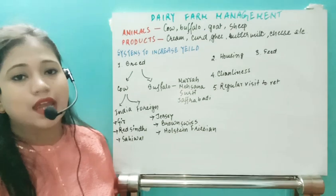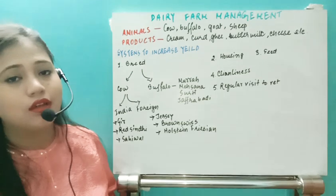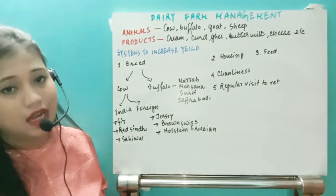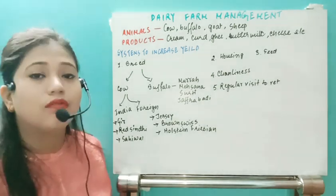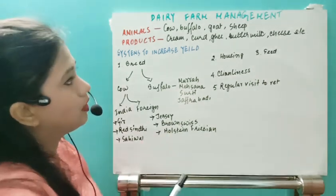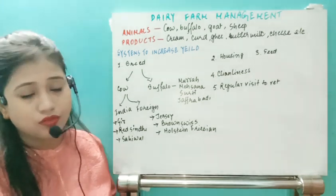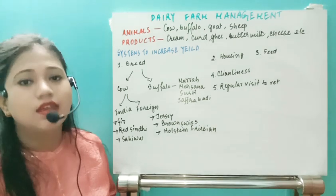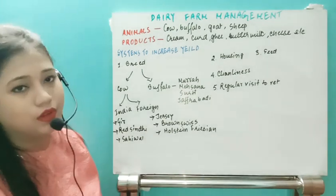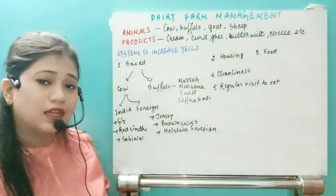Let's start with dairy farm management. The animals taken for dairy farming — from which we extract milk — are cow, buffalo, goat, and sheep in general. In various places, milk is also extracted from camels and yaks.